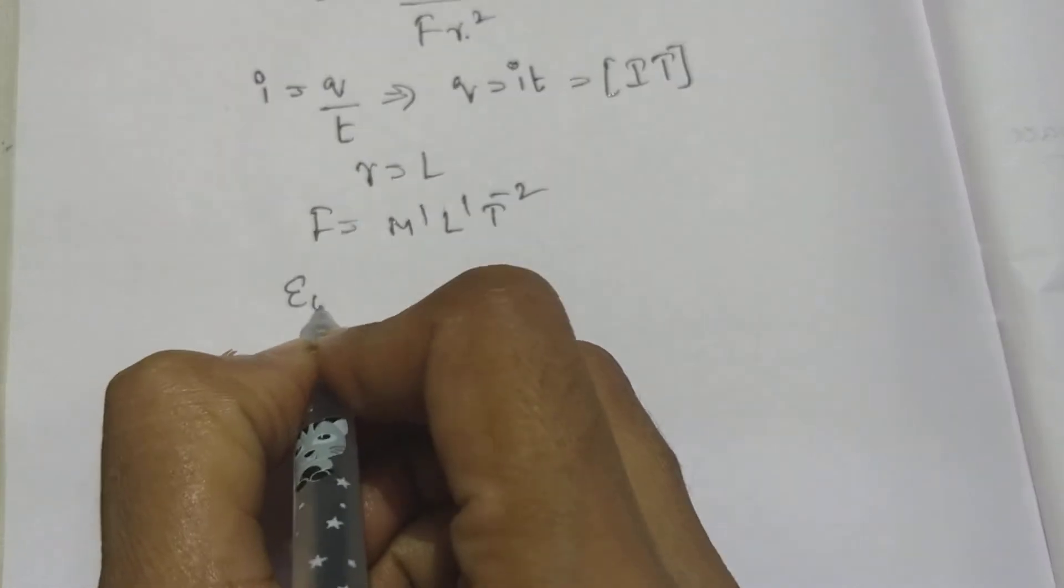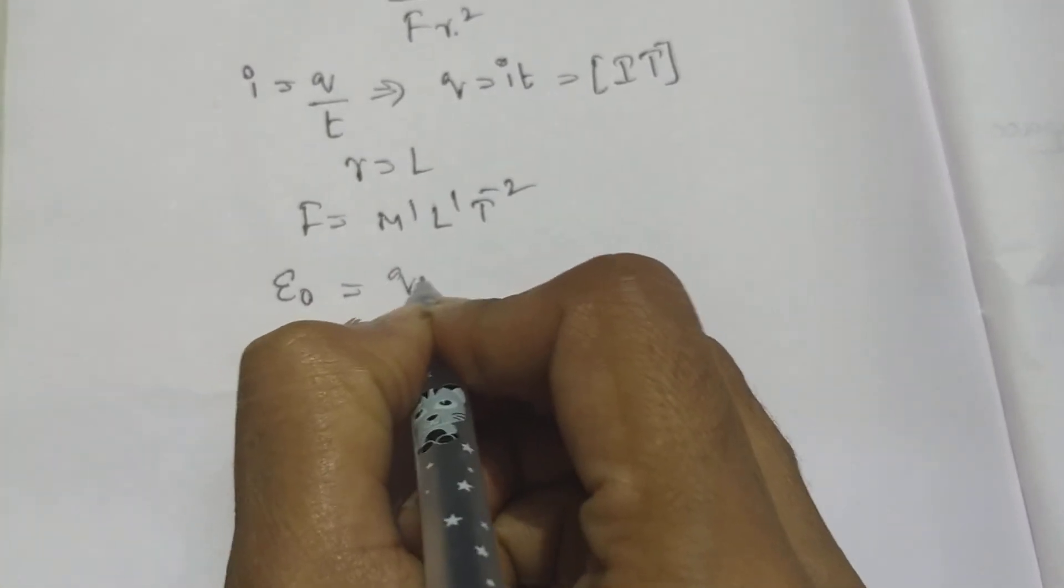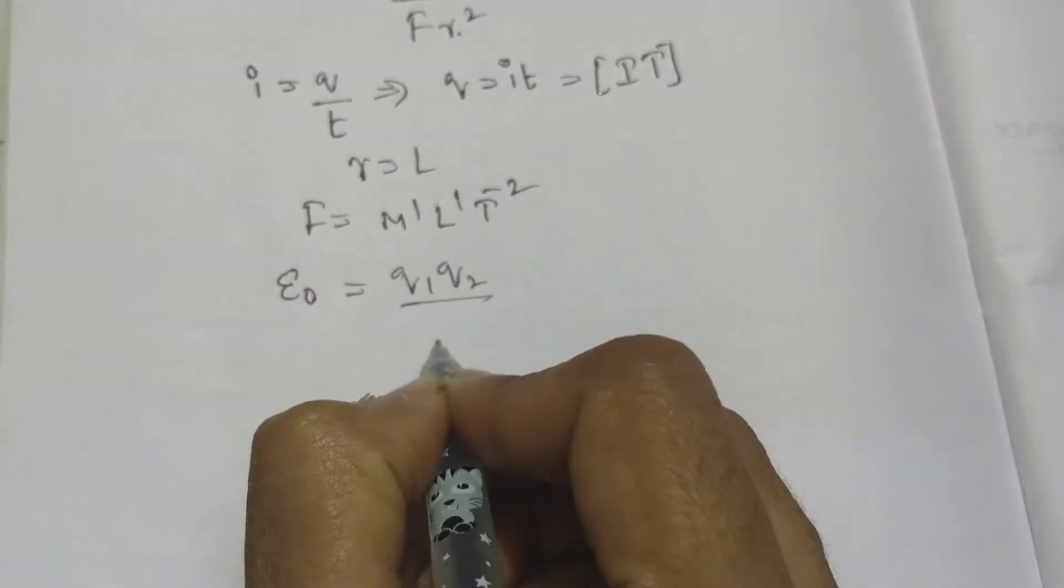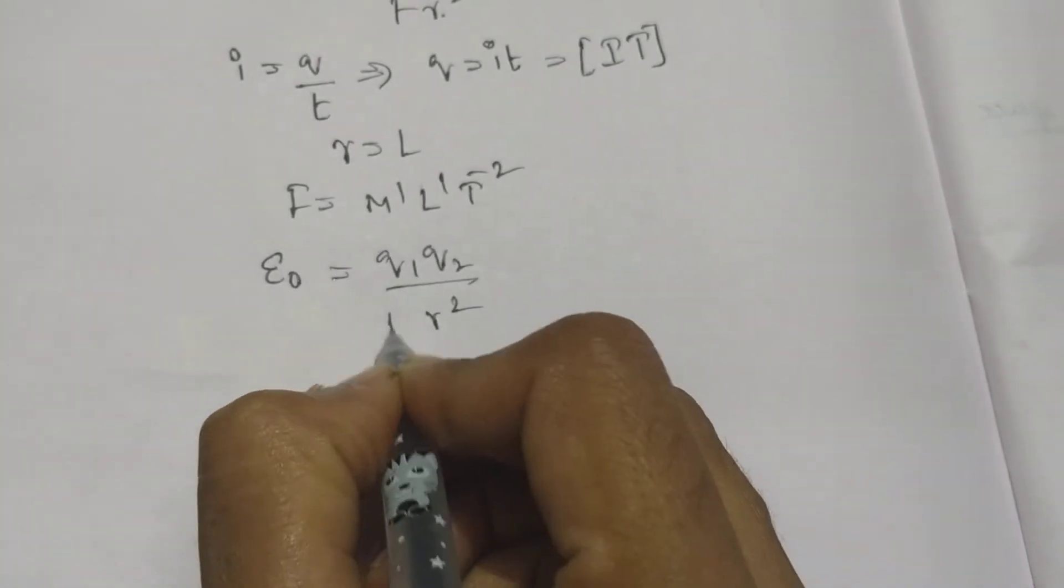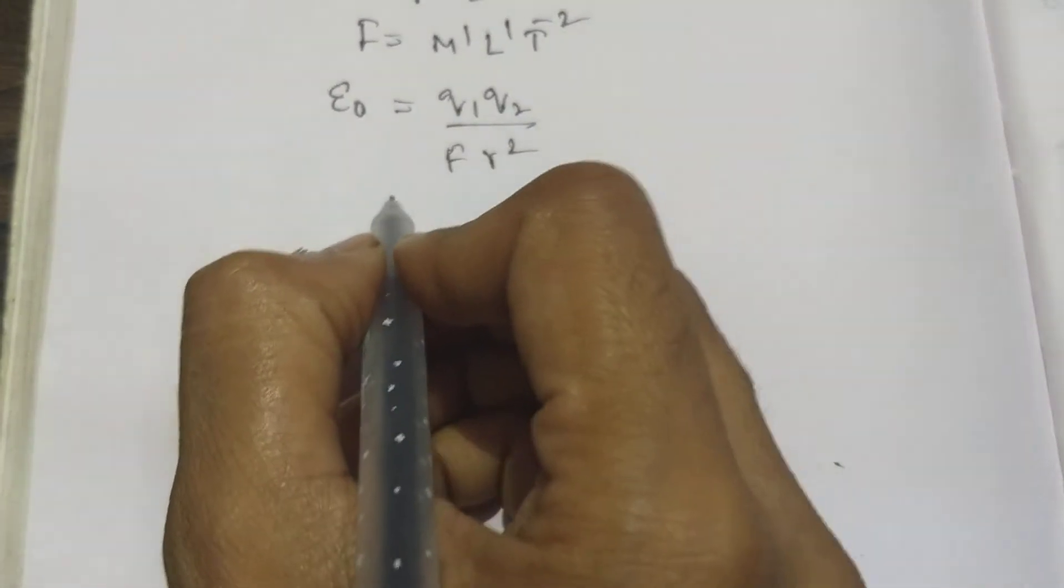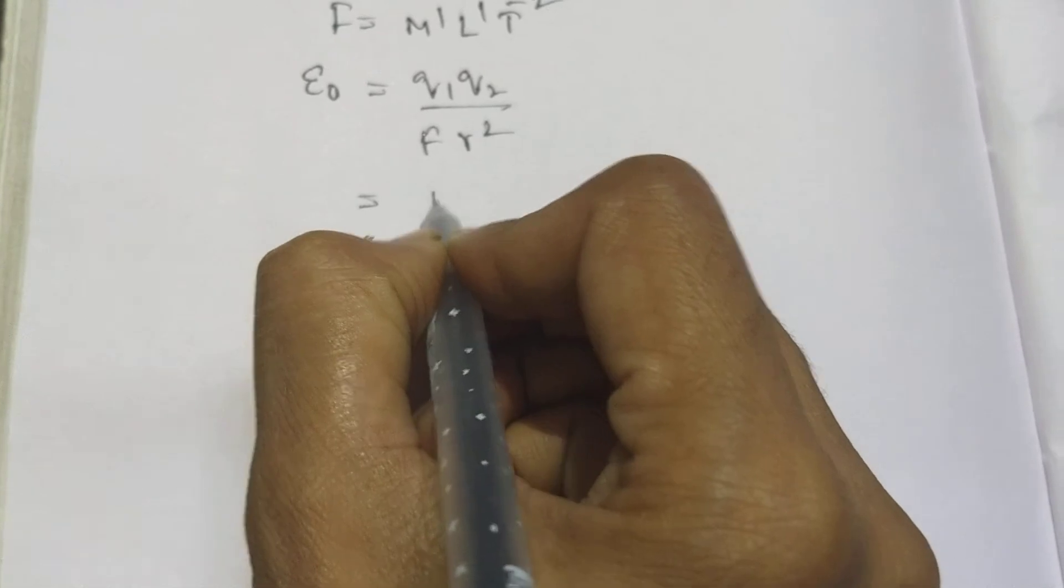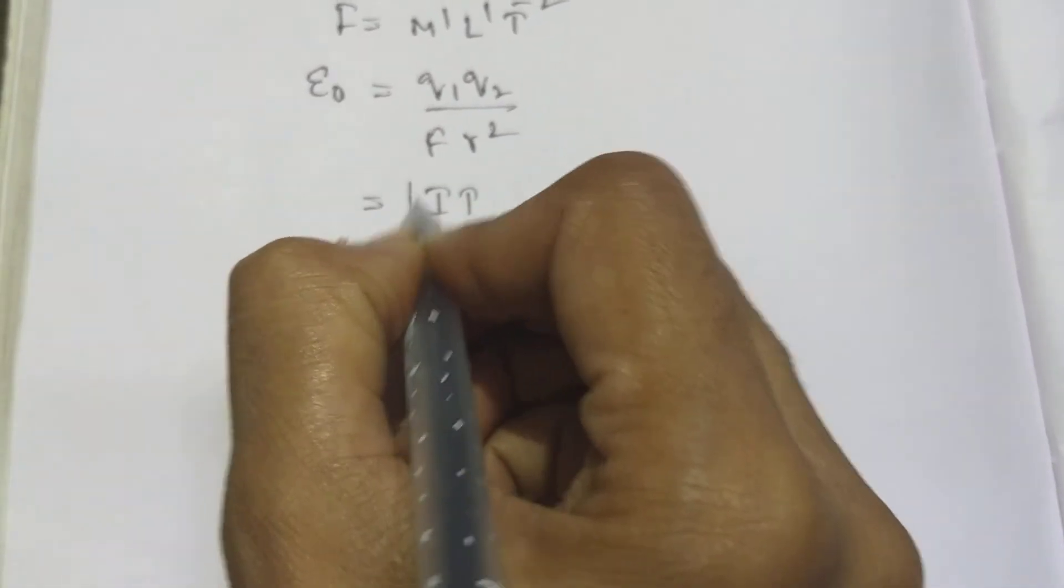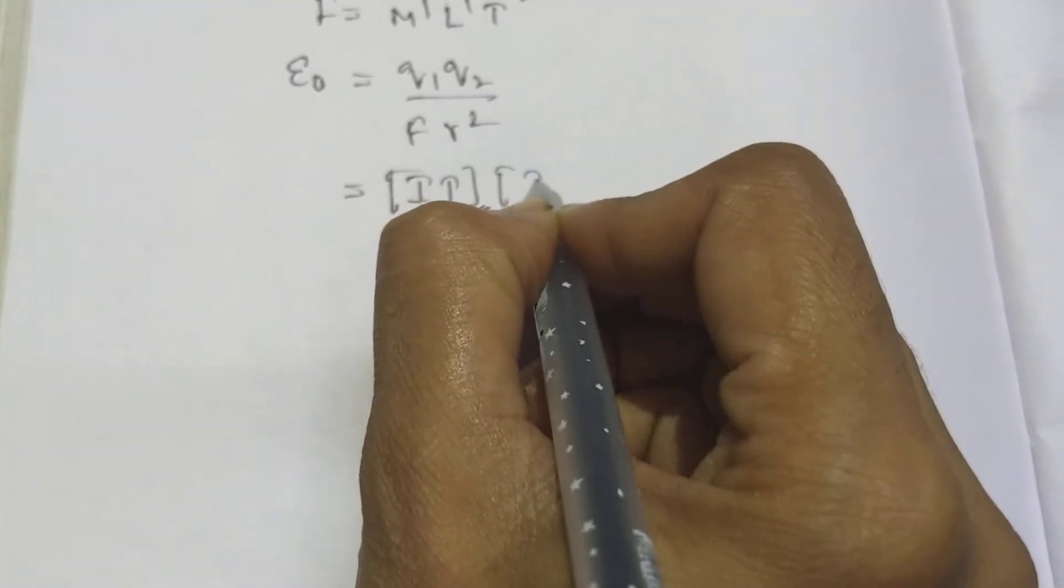By substituting all the values, epsilon naught equals Q1, Q2 divided by F into R square. You can write I into T, capital I into T, capital I into T, capital I into T.